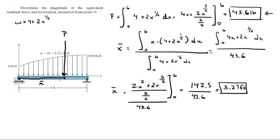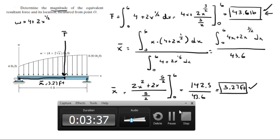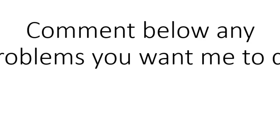So that's where the force is being applied — at 3.27 feet. The magnitude of the resultant force and its location: they are not asking you for the moment, so the magnitude is 43.6 pounds and its location is 3.27 feet from O. Those are the final answers. Please comment below if you want me to do any problems and I'll be happy to help — thank you.